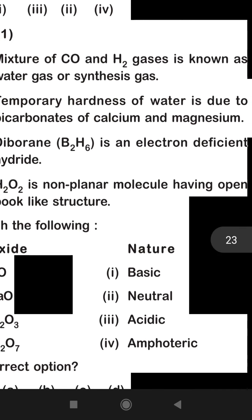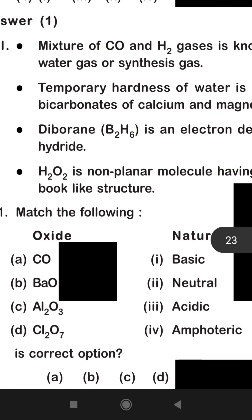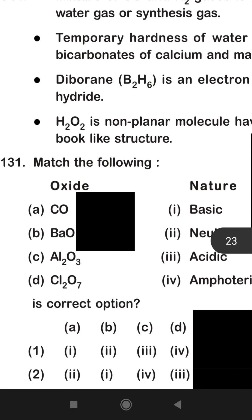Another match: oxide nature - basic or neutral or acidic or amphoteric. BaO barium oxide, Al2O3 aluminium oxide, and Cl2O7 perchloric acid. Here, CO carbon monoxide is neutral in nature.